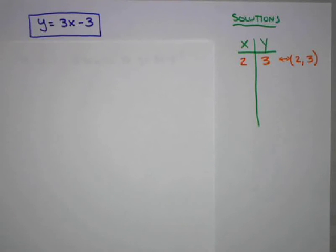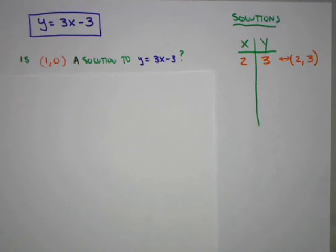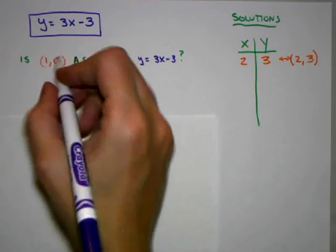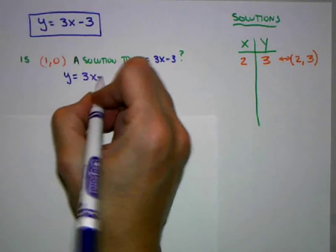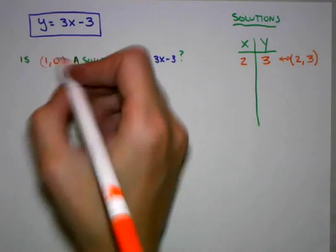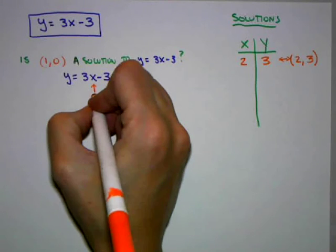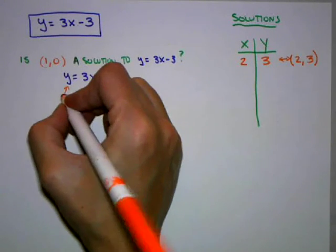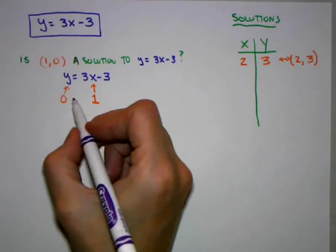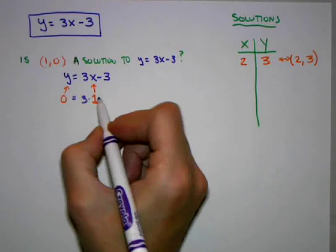Next I'm going to look and see if I can find some other solutions to this equation. So I'm going to ask: is the point (1,0) a solution to y = 3x - 3? Again, I'll start by writing my equation y = 3x - 3. I'll plug in 1 for x and at the same time plug in 0 for y.